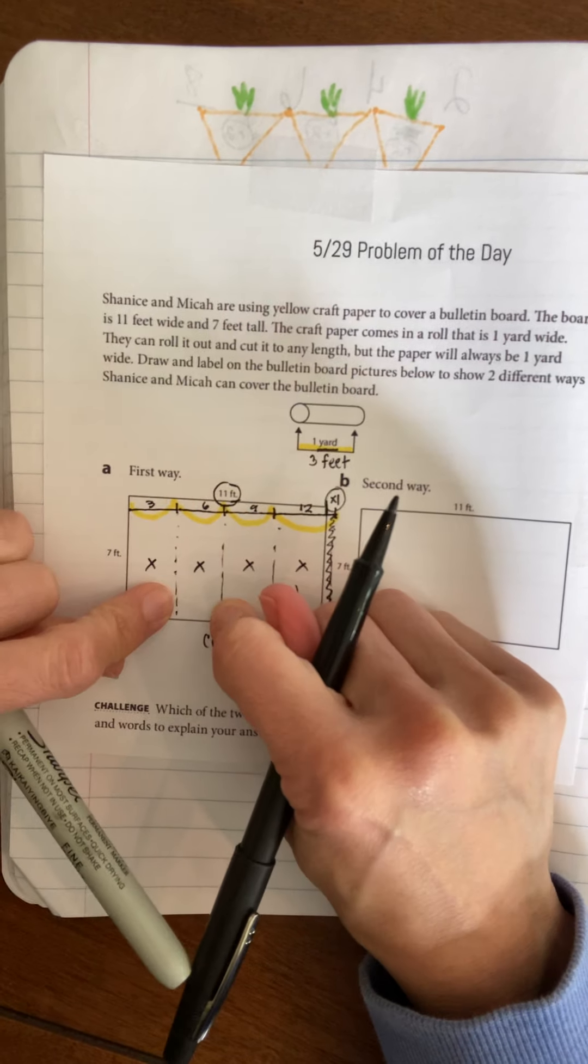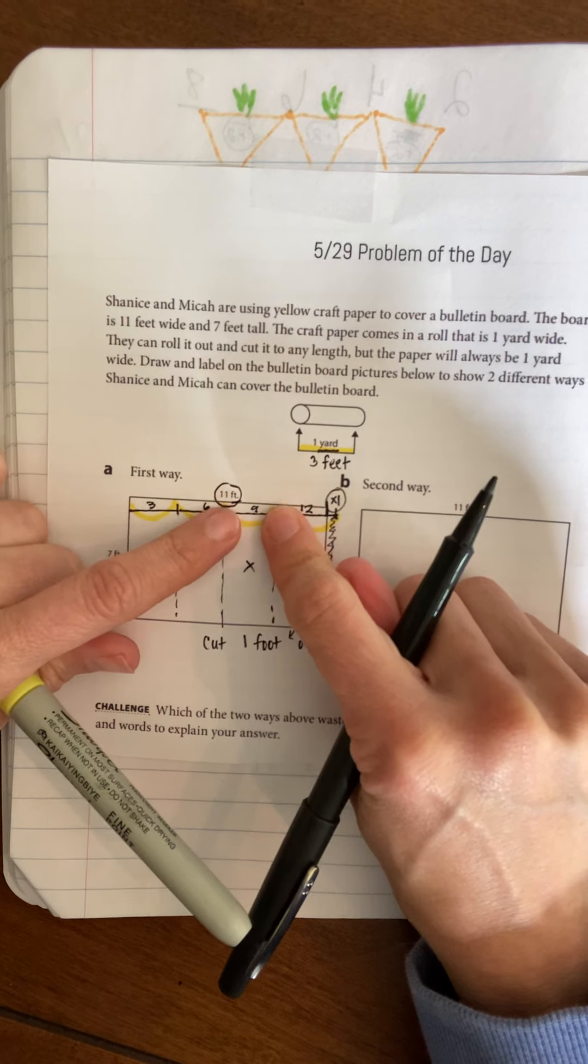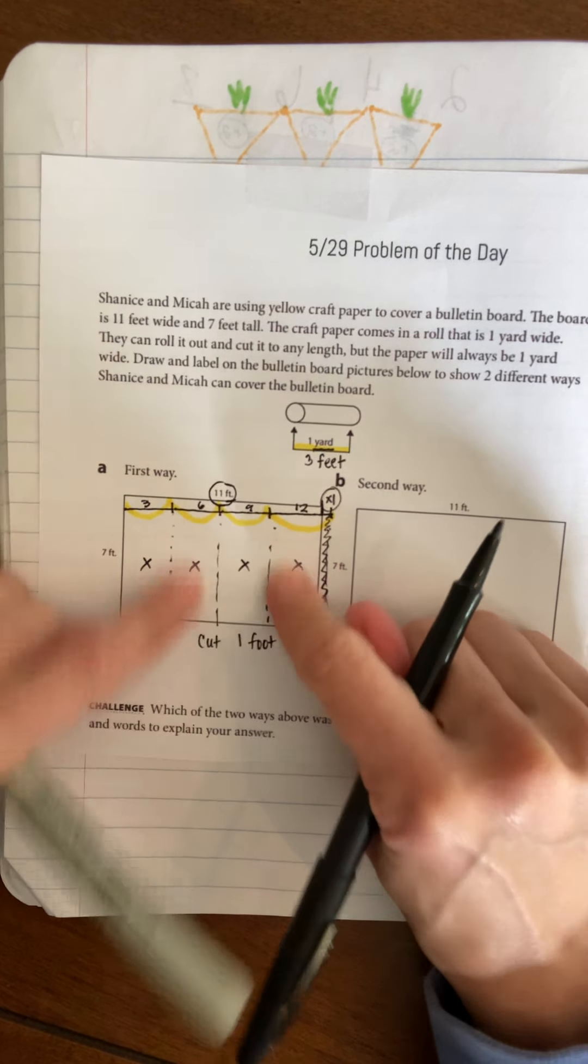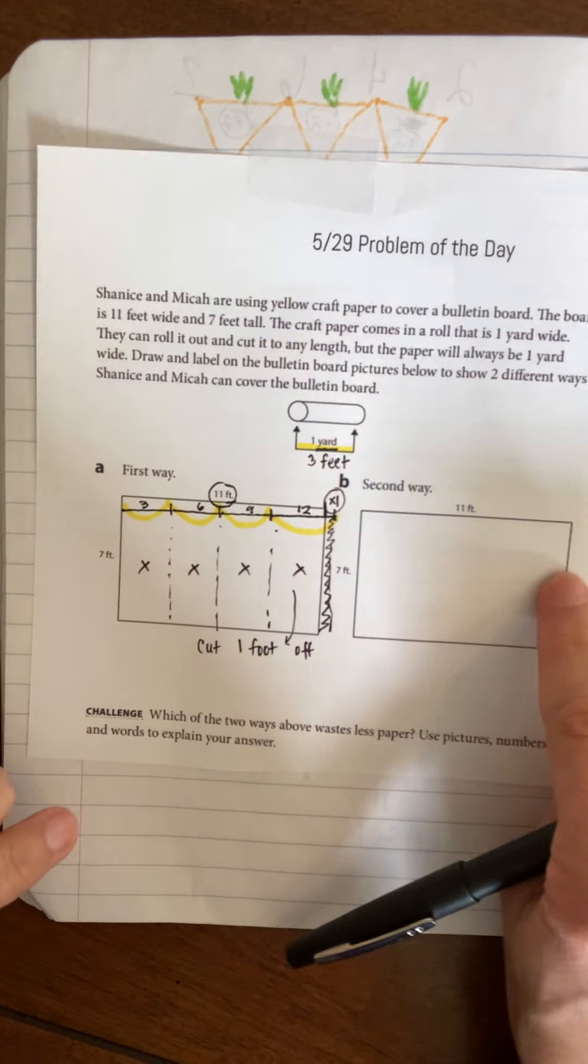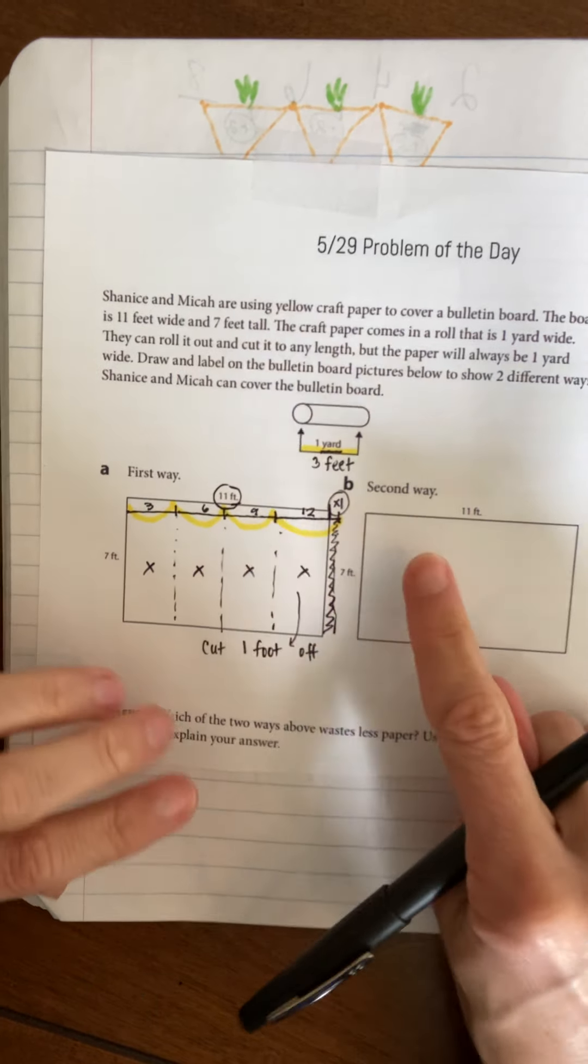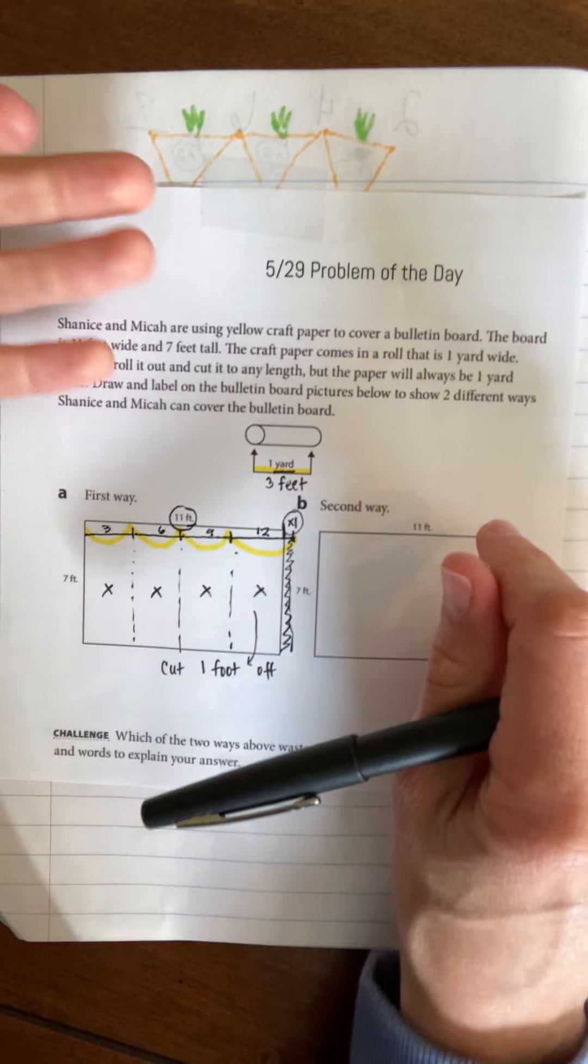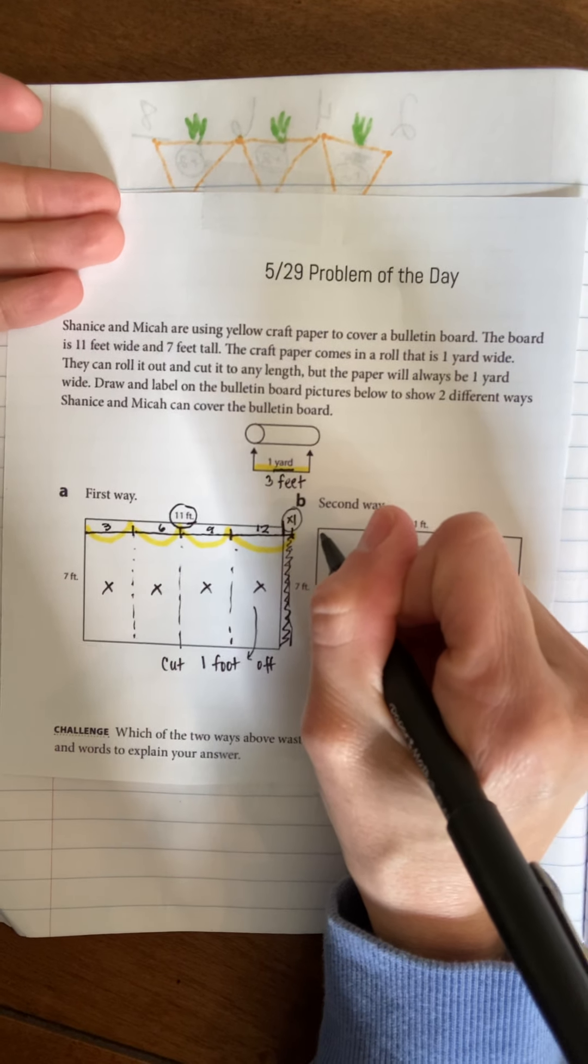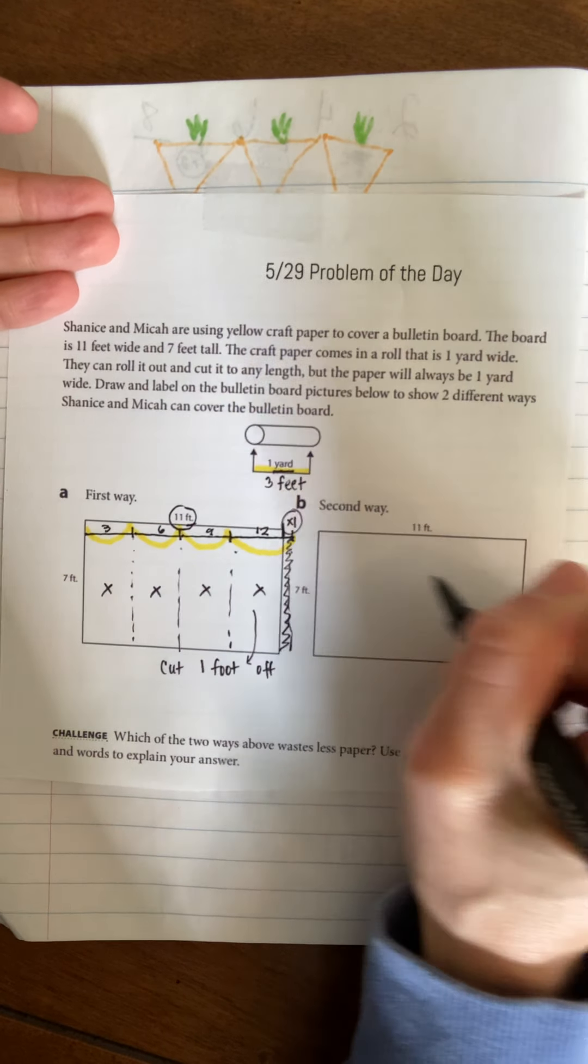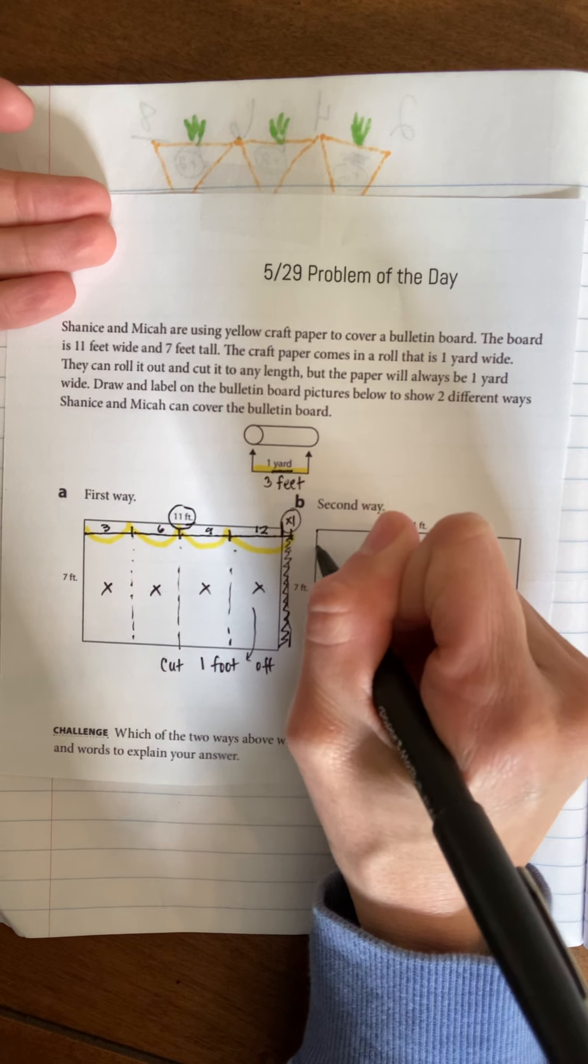The next way is to hold it vertically - vertically is up and down, like columns. Another way to do it is to hold it into rows.